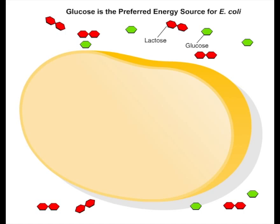Arabinose, galactose, and maltose. The enzymes to metabolize glucose are made constantly by E. coli.